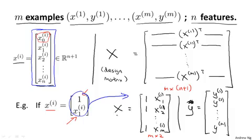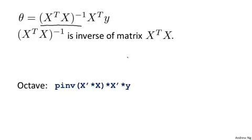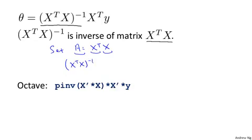Having constructed the matrix X and the vector y, we compute theta as X transpose X inverse times X transpose y. To clarify what X transpose X inverse means: X transpose X is itself a matrix — call it A — and then X transpose X inverse is simply the inverse of A. So you compute X transpose X, then compute its inverse, and that's how you evaluate this expression.